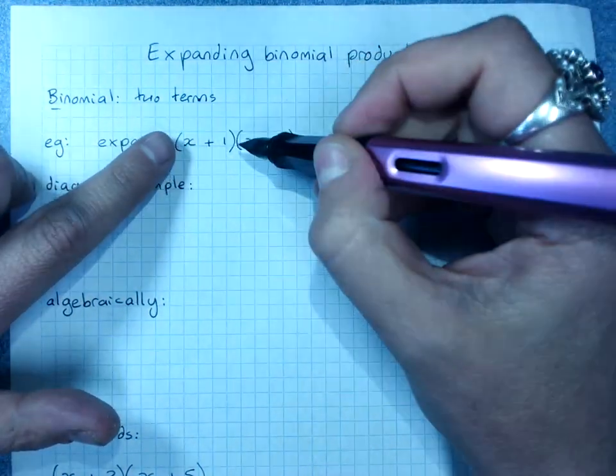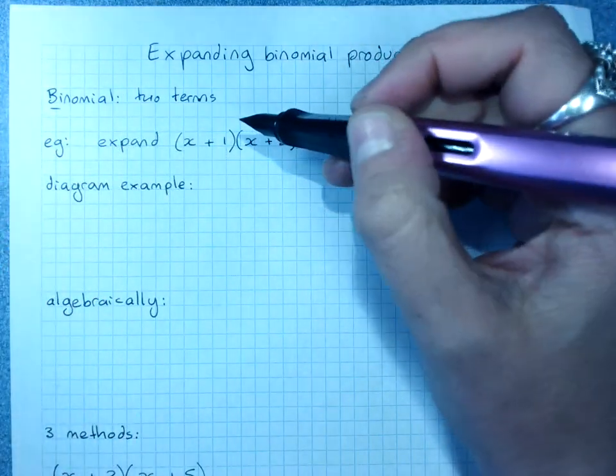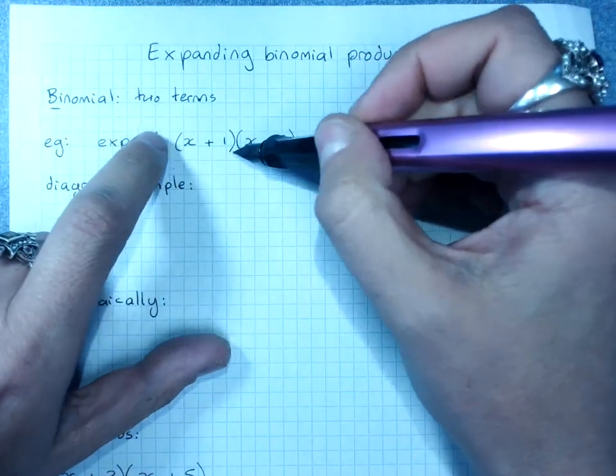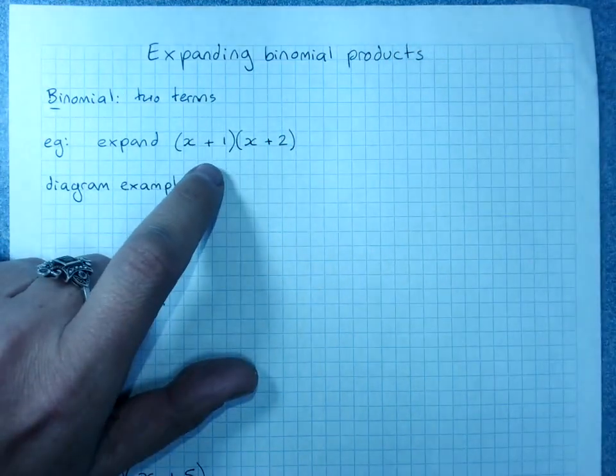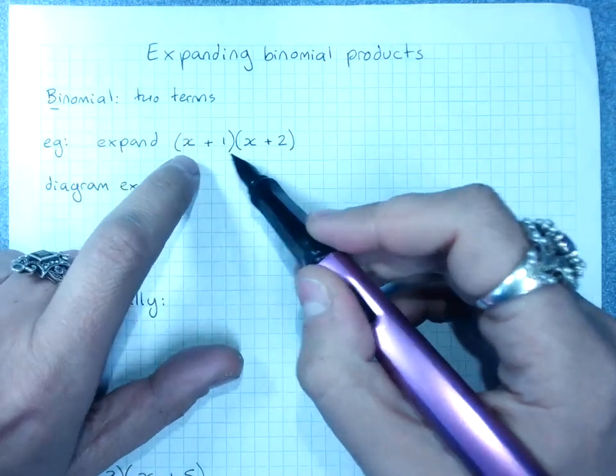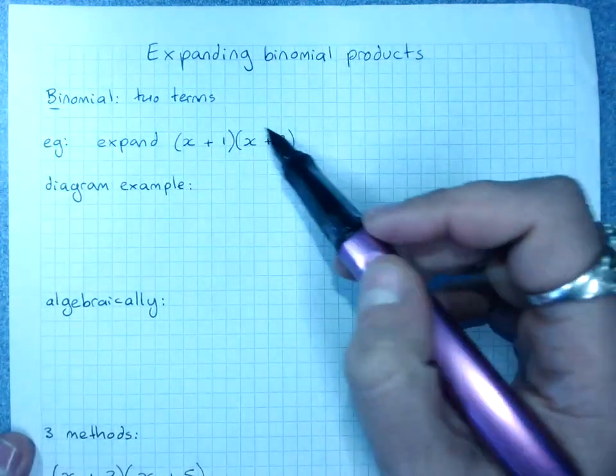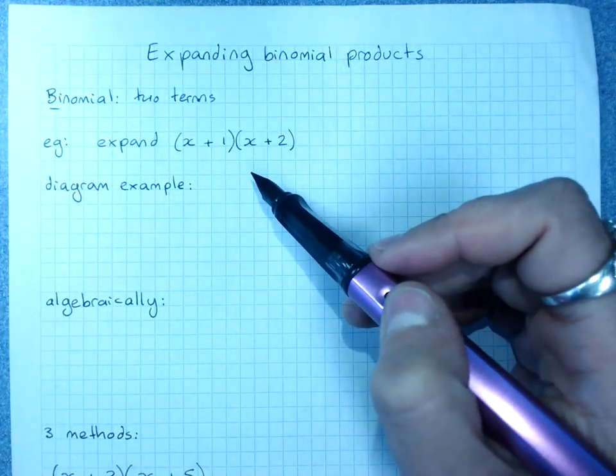A binomial product is a product of two binomials. So we are multiplying together two expressions in brackets which have two terms each. So this is a binomial expansion or binomial product.